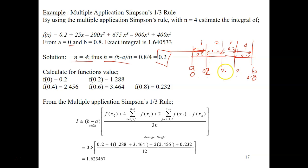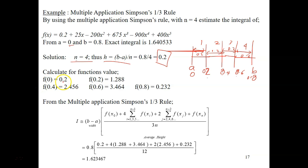The intermediate points are automatically 0.2, 0.4, and 0.6. You get these by adding 0.2 each time: 0 plus 0.2, then 0.2 plus 0.2, then 0.4 plus 0.2. Now that you've figured out all the points, it's time to list out their function values. When x equals 0, f(x) is 0.2. When x equals 0.4, f(x) is 2.456. You calculate for all the other points to get all function values.